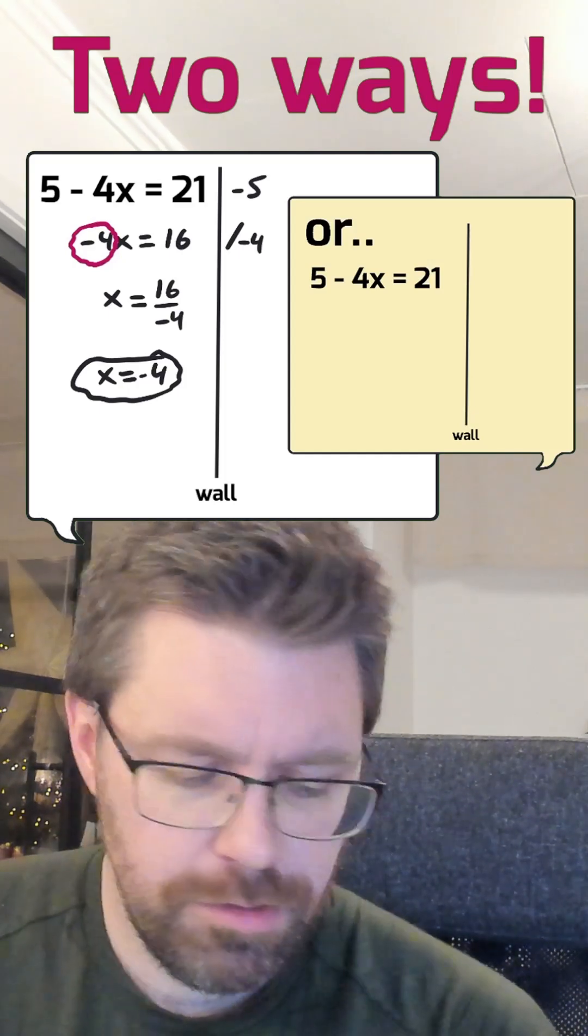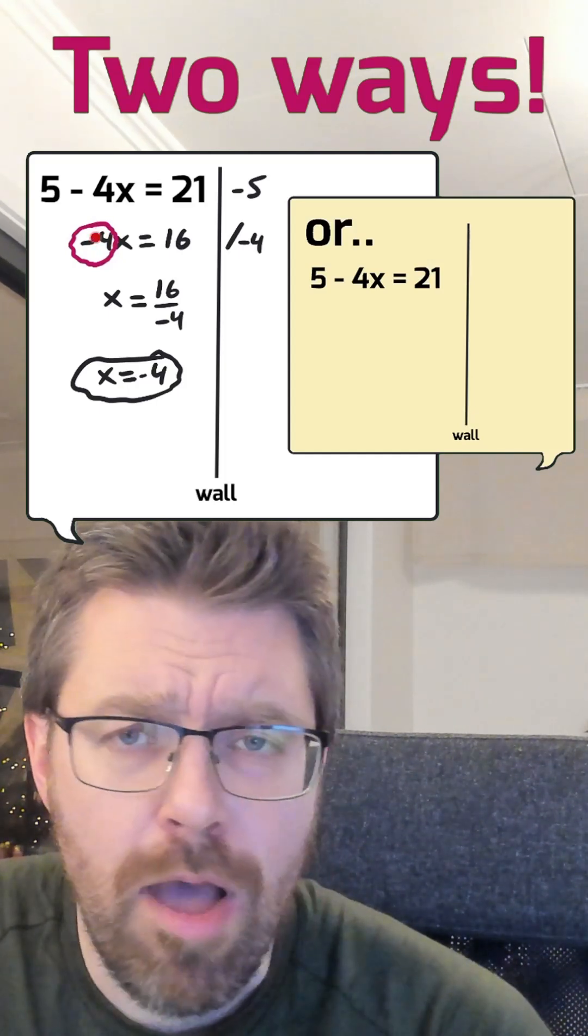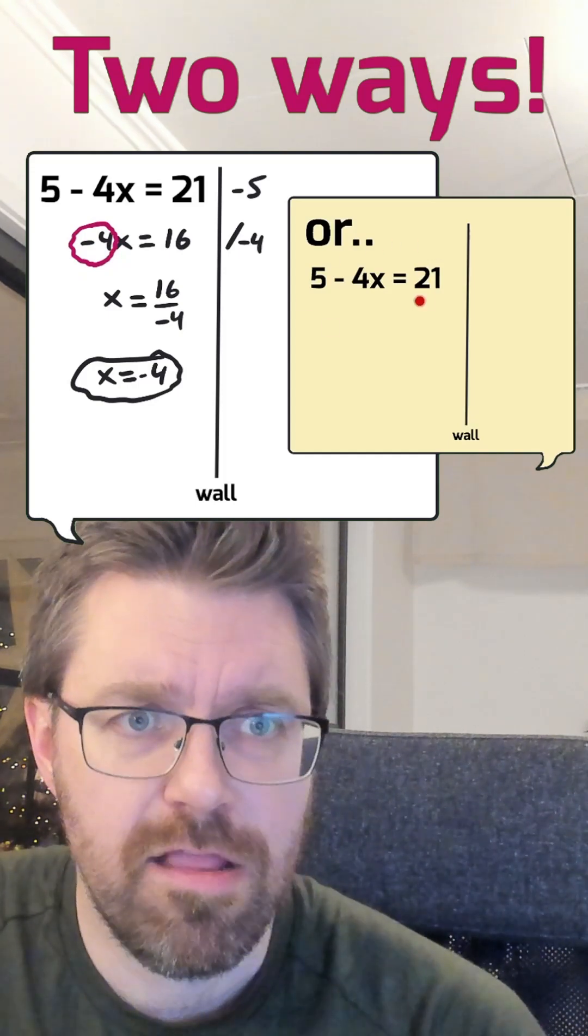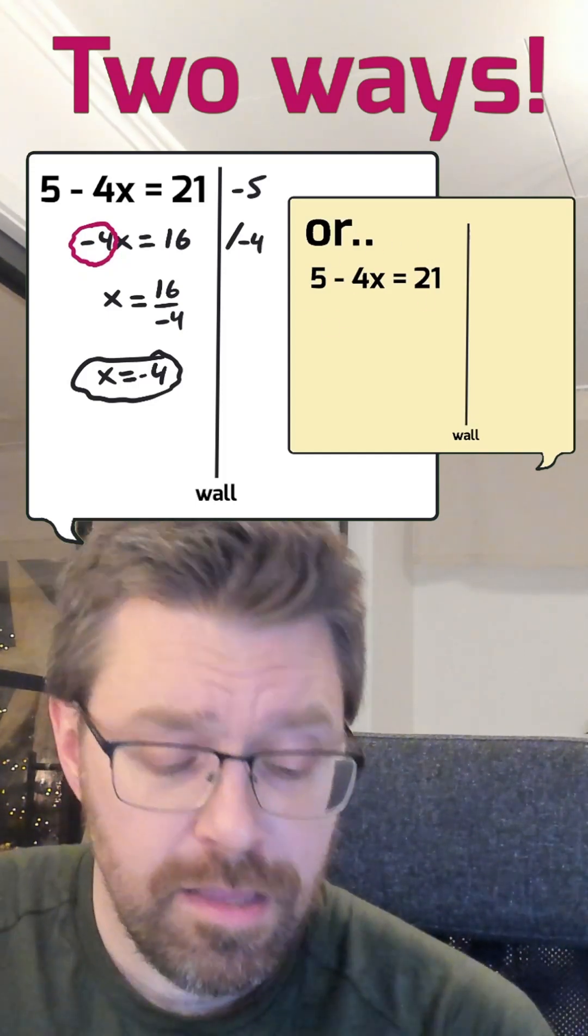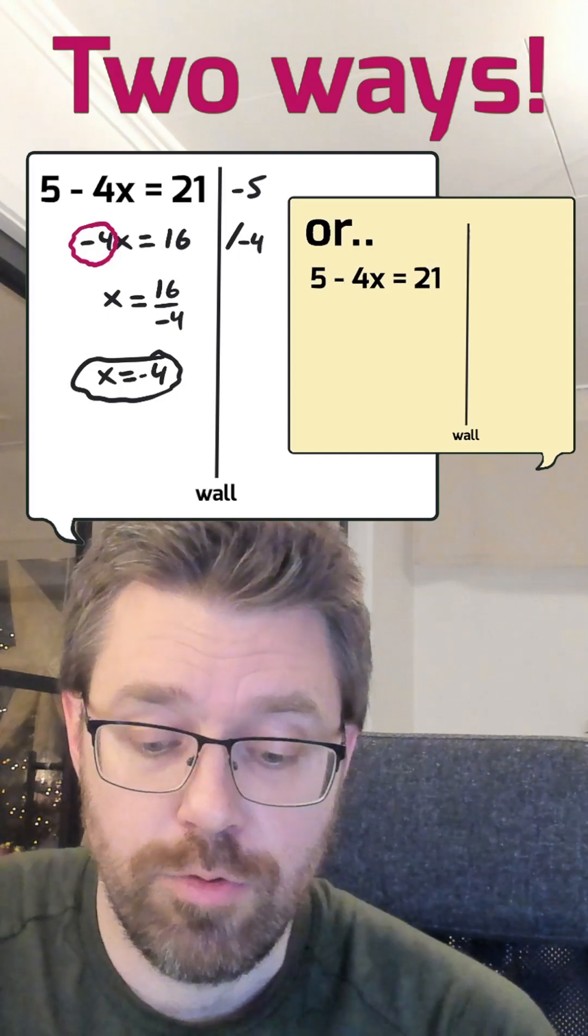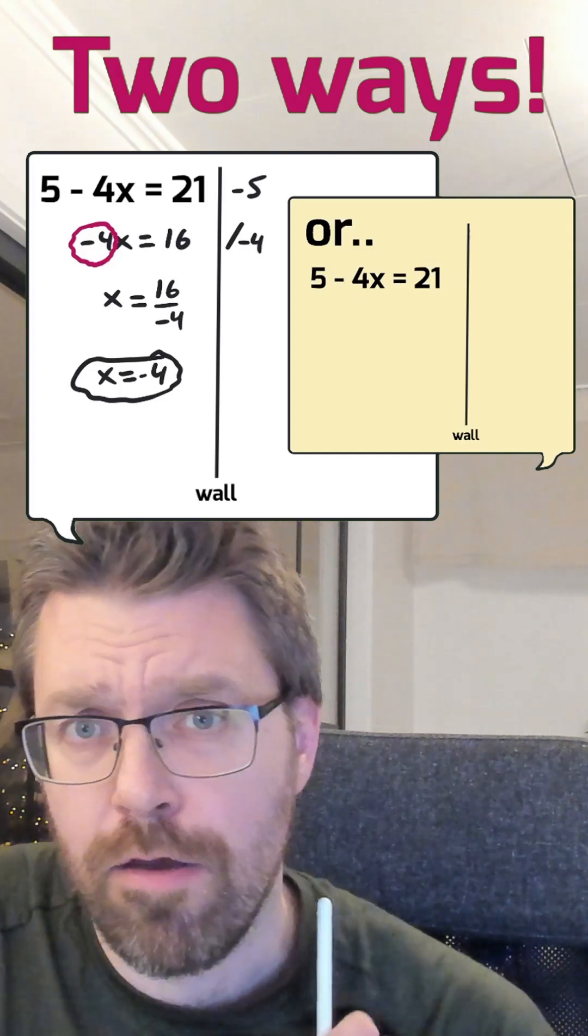If you think it would be hard to divide by a negative number, you can do it this way instead, the other way. And it is to send over minus 4x to the other side right away to get rid of the minus sign.